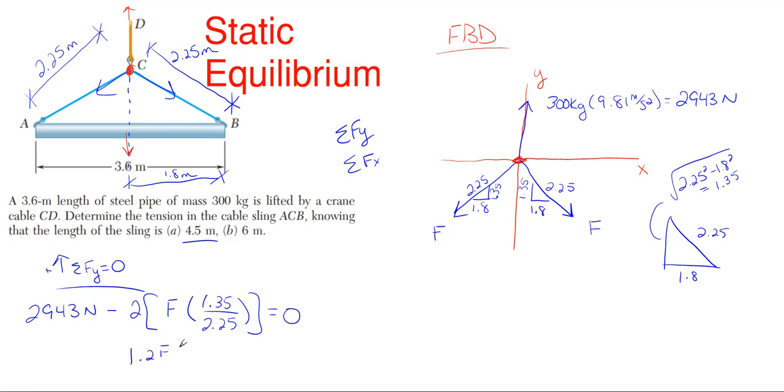All of that has to be equal to zero. If we work this out, we have 1.2F equals 2943 newtons. So therefore, my force F is essentially 2943 divided by 1.2, and that gives me a total of 2452.5 newtons of force for each of those forces on the diagram. That's our answer for part A - how much tension is in that sling given the dimensions shown.